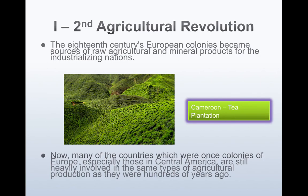In the 18th century, European colonies became sources of raw agricultural and mineral products for the industrializing nations — what we would consider cash crops, things specifically grown and then imported into the colonizing country. Many countries that were once colonies of Europe, especially in Central America, are still heavily involved in the same types of agricultural production as they were hundreds of years ago. Examples include tea in Cameroon, coffee in Central America, sugar production in Haiti, and bananas — all produced primarily for export, not for the home country's consumption.